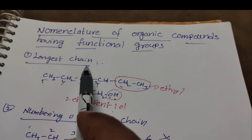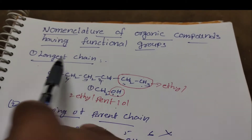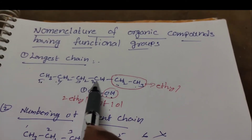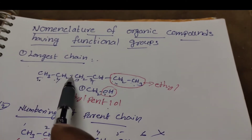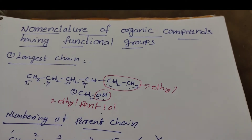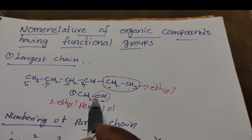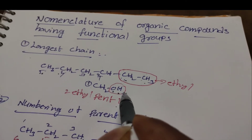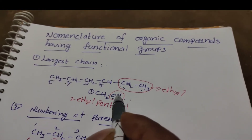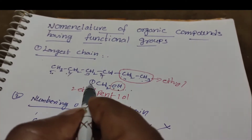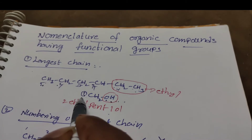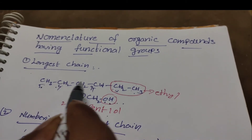The first rule is the longest chain rule. For example, taking a structure containing one, two, three, four, five, six carbons — giving numbering from left to right or right to left is wrong. Why? Because they have a principal functional group, the alcoholic group. The carbon where the functional group is attached gets the first number. So from that end, we select one, two, three, four, five carbons as the longest chain, not six.